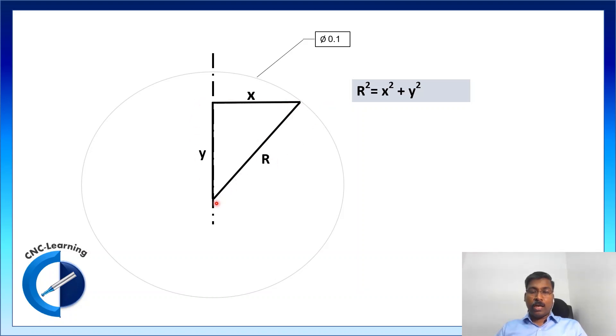Now, this relations between these three sides of this right angle triangle is given by Pythagoras theorem. Now, r square equals x square plus y square. Now, r can be calculated by square root of x square plus y square and diameter we can get by multiplying it by 2.